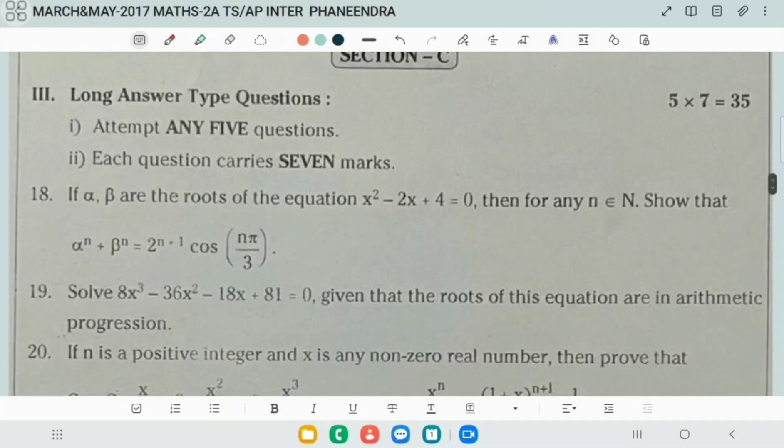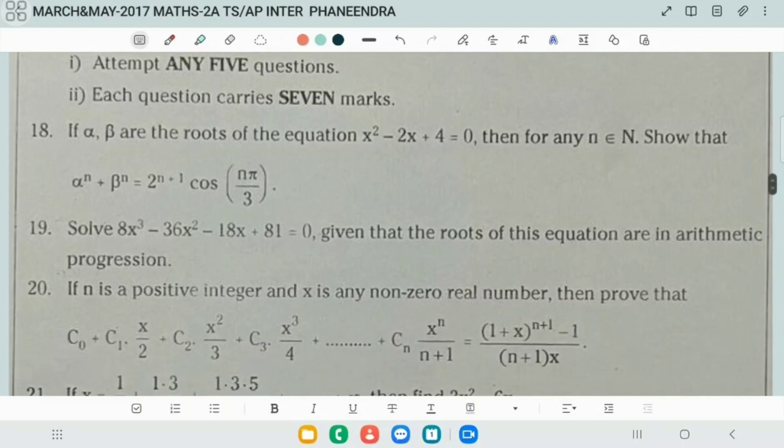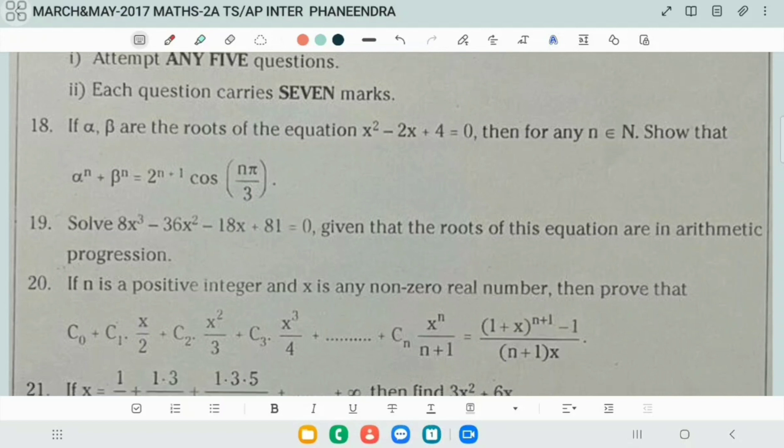Question number 18, related to Section C. Quadratic equation is given. First we will calculate the roots which are alpha and beta. After that we can apply alpha power n by using De Moivre's theorem. Next, solve the equation given that whose roots are in arithmetic progression. Roots are in AP, so you can take a minus d, a, a plus d are the roots of this cubic equation and follow.